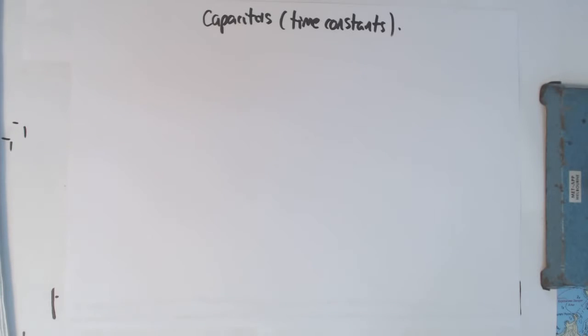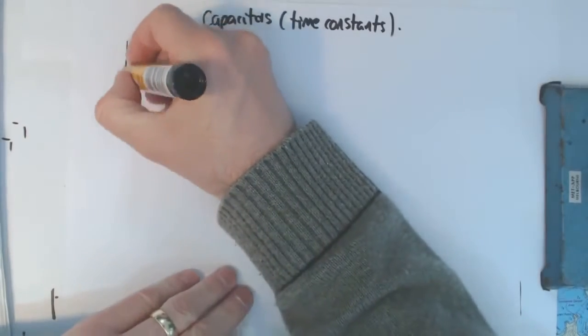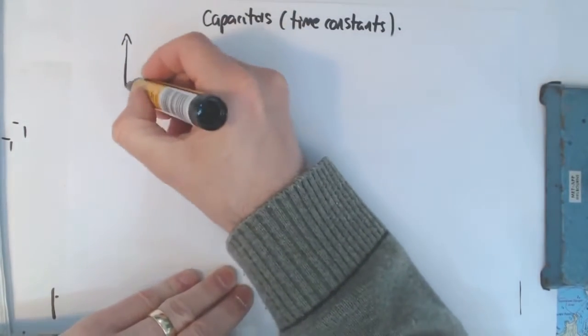Okay, what I want to look at here is time constants for capacitors. You should already have seen the charging and discharging graphs by now.